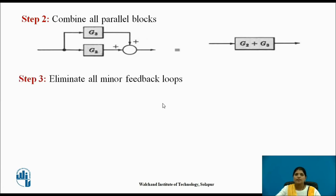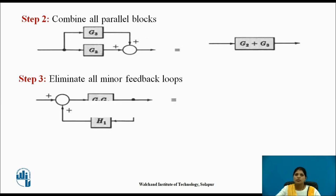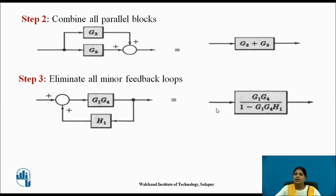Step 3: eliminate all minor feedback loops. Here H1 is in feedback with the G1 G4 block, and there is a positive sign. So use the standard formula and reduce the block diagram — that is G1·G4 divided by 1 minus G1 into G4 into H1.